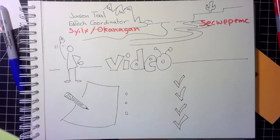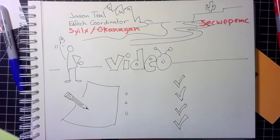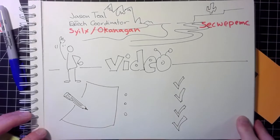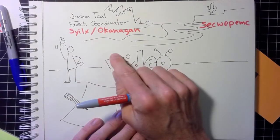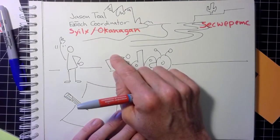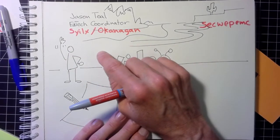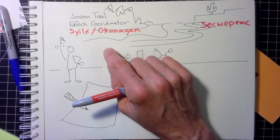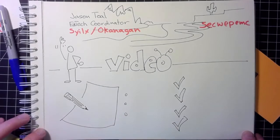This is Jason Toll, Educational Technology Coordinator at Thompson Rivers University. I am new to Thompson Rivers and very happy to be here today, recording this video from the traditional territories of the Syilx Okanagan peoples, coming to you from a little place called Meadow Valley, right outside of Summerland.